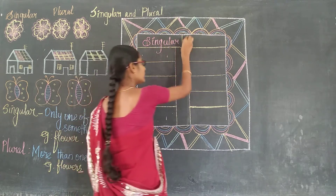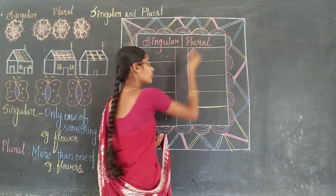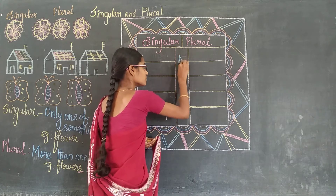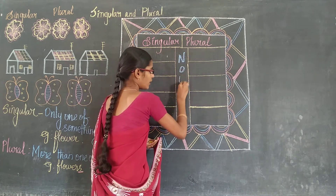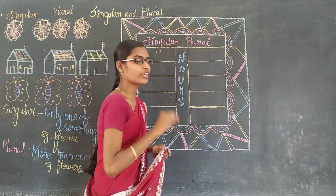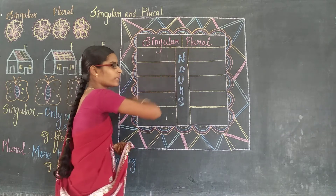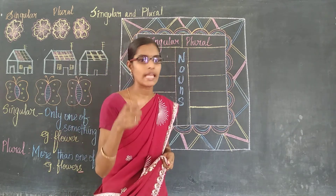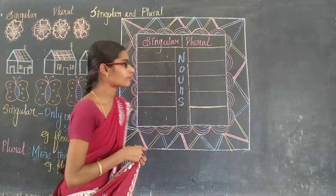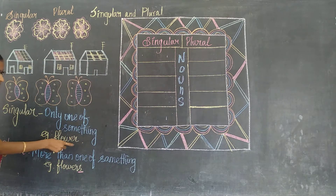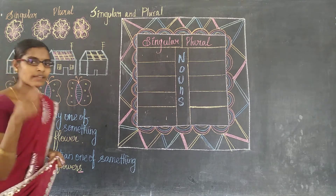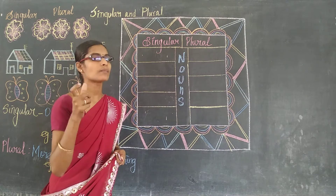Here is singular and here is plural. And here, nouns. Before we go to see how to change singular into plural, we have to know what is meant by base form. Base form means the word as it is — that is called the base form. Flower — flower is here, this is called base form.